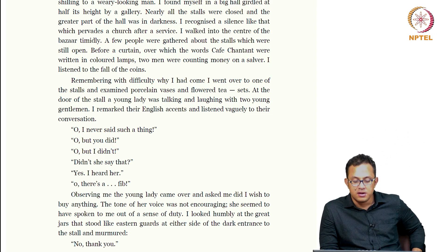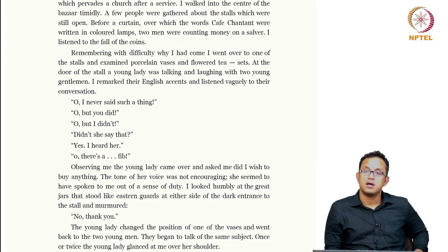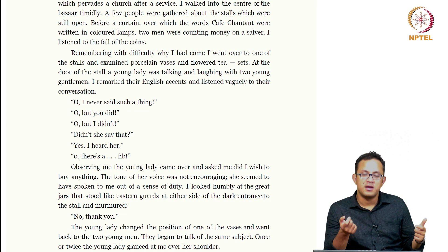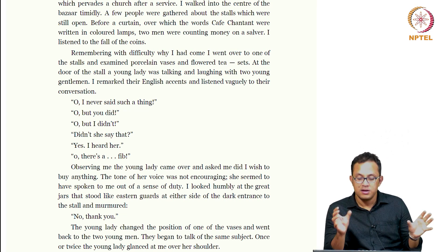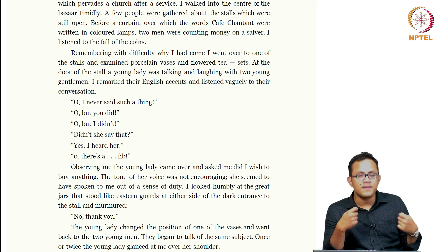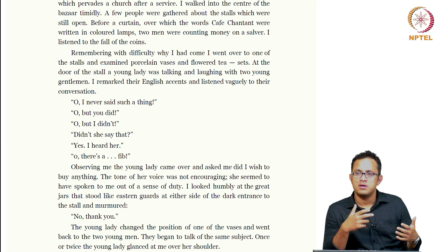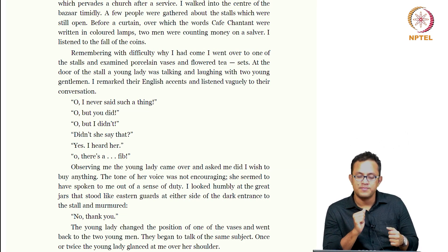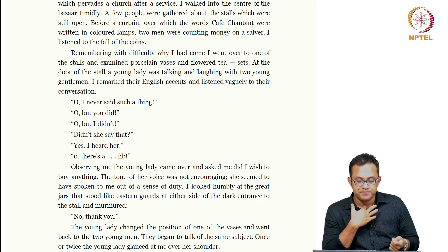I looked humbly at the great jars that stood like eastern guards at either side of the dark entrance to the stall and murmured, 'No, thank you.' The two jars are equated in his imagination with massive eastern guards guarding a kingdom — the stall suddenly becomes an enemy kingdom and the two jars are eastern guards protecting the gates. He is still using the vocabulary of a knightly narrative, the vocabulary of chivalrous romance. But at the level of experience this is actually very deflated and insignificant — and that deflated quality is conveyed by the use of the word 'fib.'